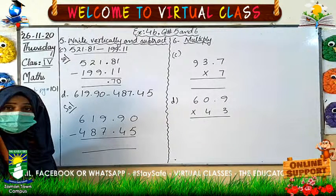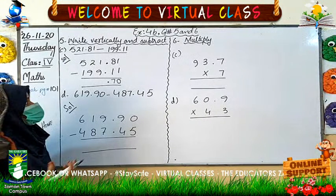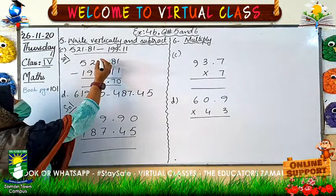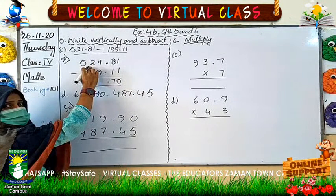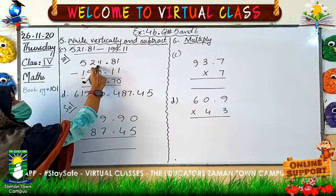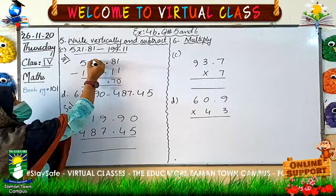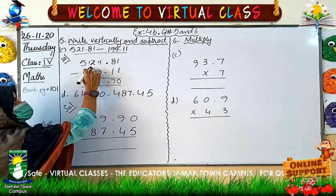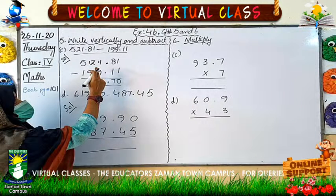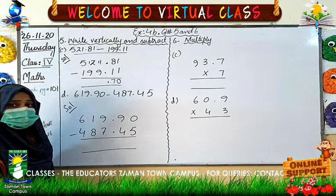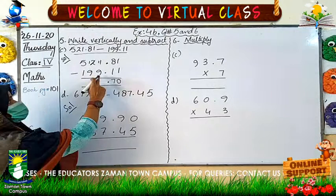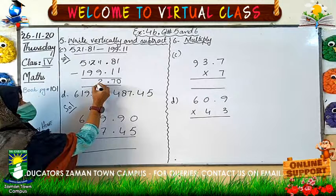I have to borrow 1 from the next digit, so it has become 11. Now it is very easy for me to subtract. If I subtract 9 from 11, okay.